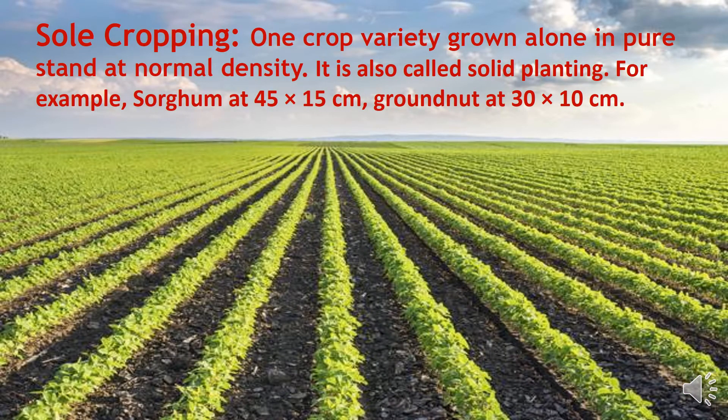Sole cropping: one crop variety grown alone in pure stand at normal density. It is also called solid planting. For example, sorghum at a spacing of 45 x 15 cm, and groundnut growing at a row spacing of 30 cm and plant-to-plant spacing of 10 cm.